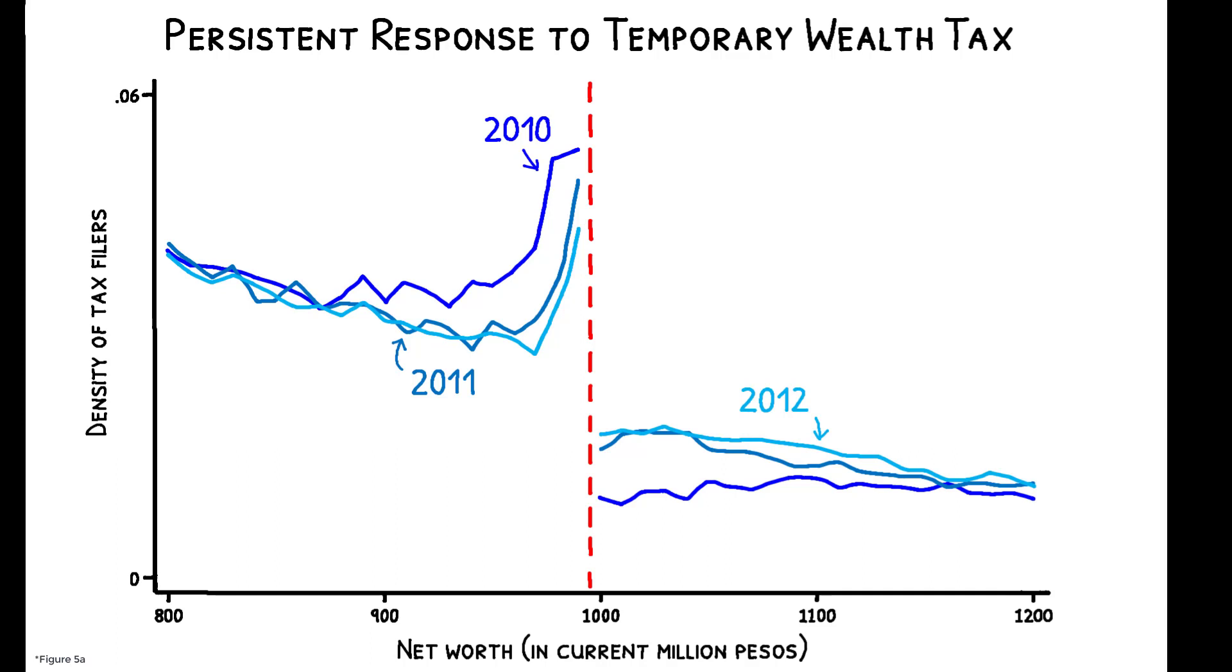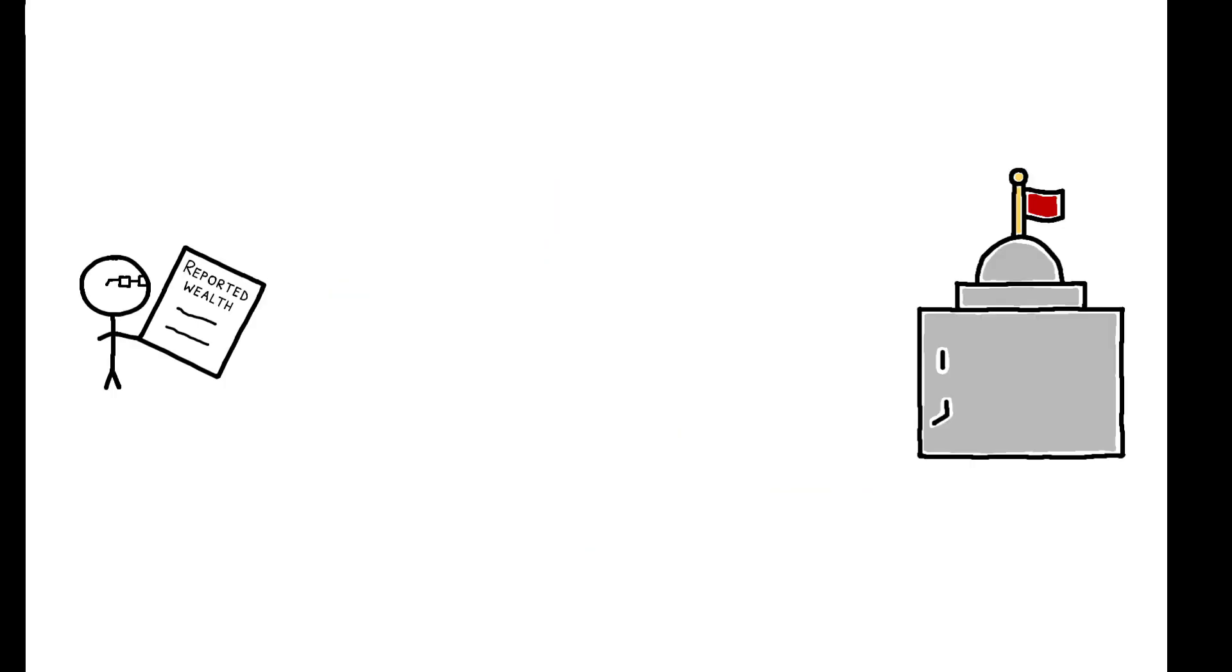Similar effects appear for other temporary tax changes, and the evidence suggests this reflects strategic behavior. Immediately reverting to pre-reform levels of reported wealth is conspicuous and flagged by the tax authority, so taxpayers remain bunched to minimize the risk of detection.